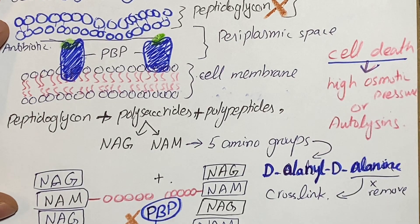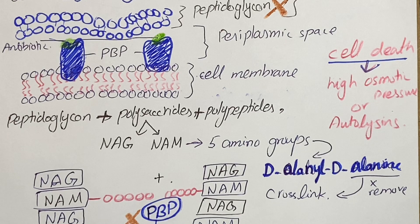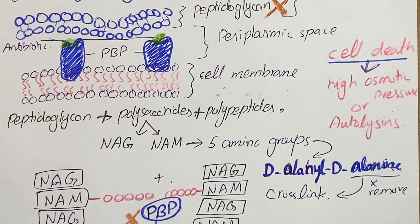Cell death can occur due to high osmotic pressure or due to autolysins. Autolysins are enzymes normally present for the degradation and remodeling of the cell wall in bacteria — old cell wall is replaced by new cell wall. But when autolysins destroy the previously formed cell wall and there is no further formation of new cell wall because of inhibition of transpeptidation, ultimately there will be no cell wall in the bacterium.